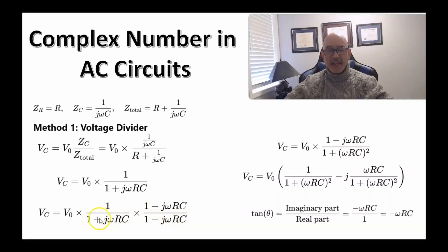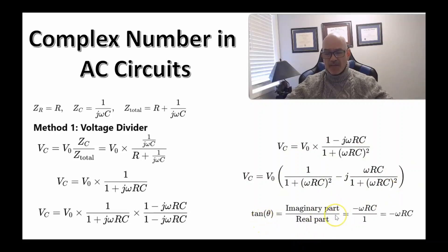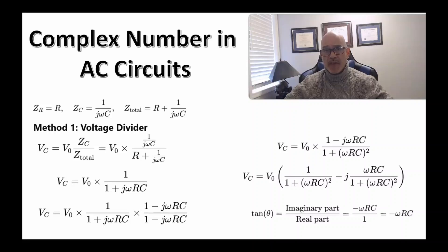With a real denominator, we can write the voltage across the capacitor as a real part plus an imaginary part. The tangent of the phase angle equals the imaginary part divided by the real part, which in this problem is negative omega·RC. That's how you calculate the phase angle. What's most important is to understand intuitively what the phase angle means, and that's what I'll explain as we move through this presentation.